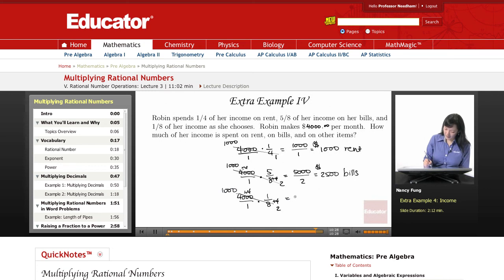1,000 times 1 is 1,000, and 1 times 2 is 2. That leaves us with $500 for her to spend as she chooses.